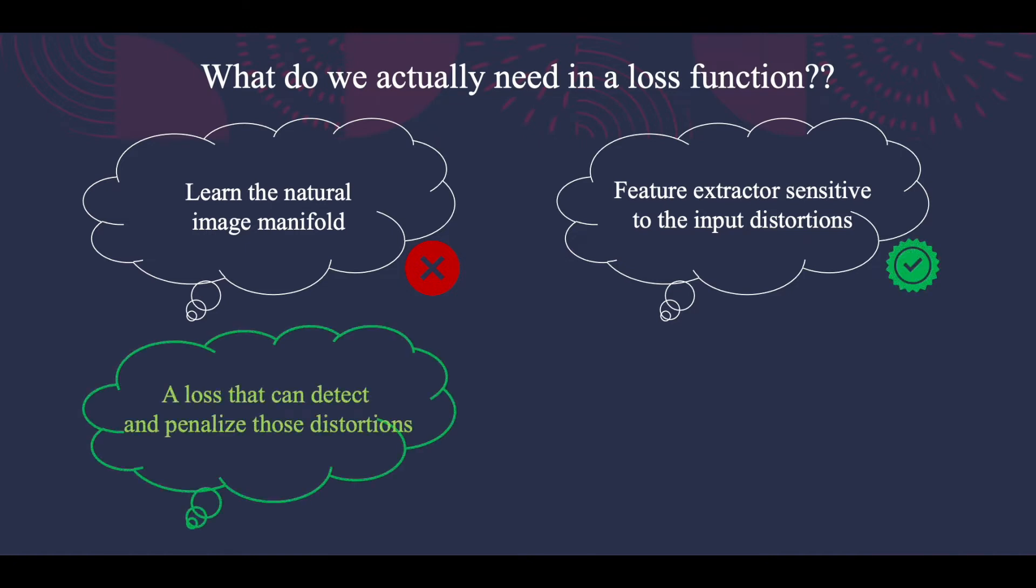We need a feature extractor that can detect and penalize a particular set of distortions. This gives rise to task-specific losses, where the feature extractor is trained specifically to detect and remove those particular artifacts.